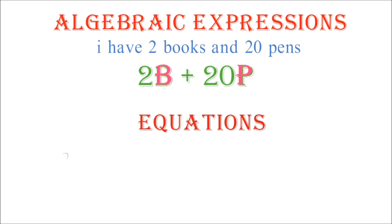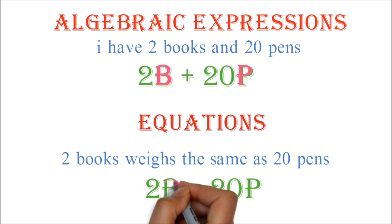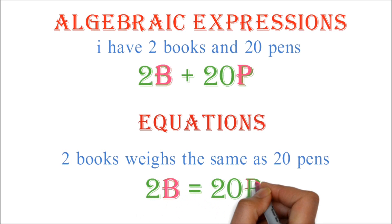Equations show the relationship between two algebraic expressions by the introduction of an equal sign. Example, when we say 2 books weighs the same as 20 pens, we can write it as 2b equals 20p, where b is for weight of book and p is for weight of pen.